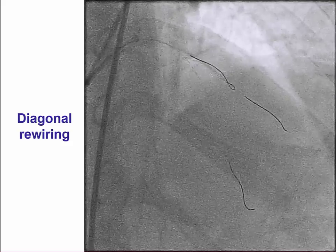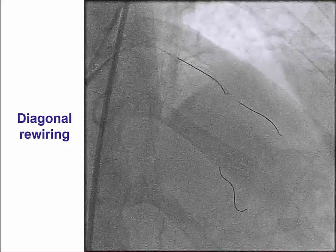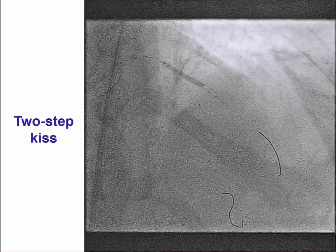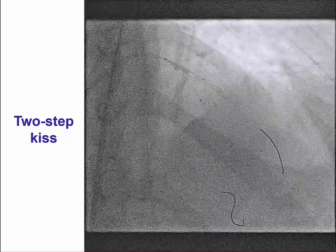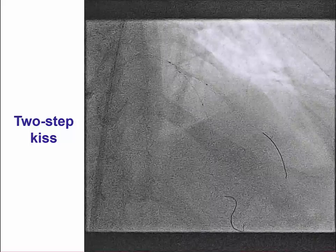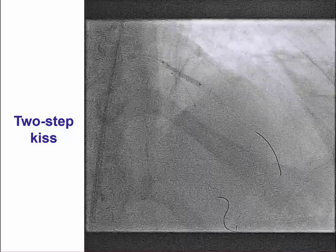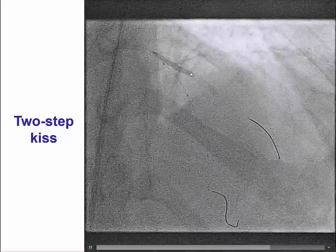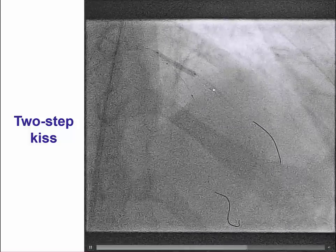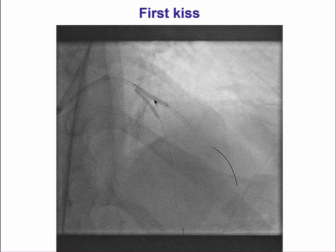The next step in DK CRUSH is to advance a guide wire into the side branch. Then the jailed guide wire is removed and the first KISS is performed. We typically perform every KISS balloon angioplasty as a two-step procedure: first inflating the balloon into the side branch at high pressure, close to 20 atmospheres, and then inflating simultaneously both the side branch balloon and the main vessel balloon. That completes the first KISS.